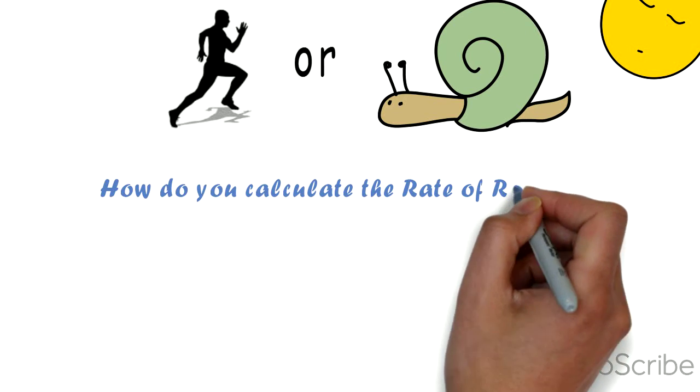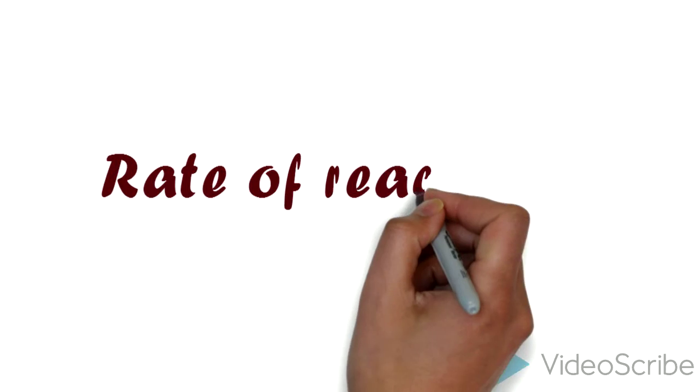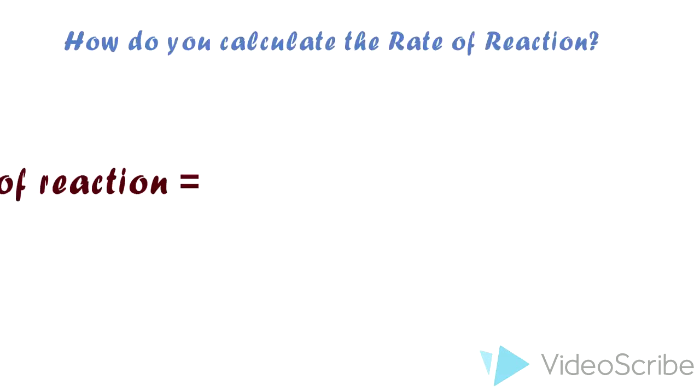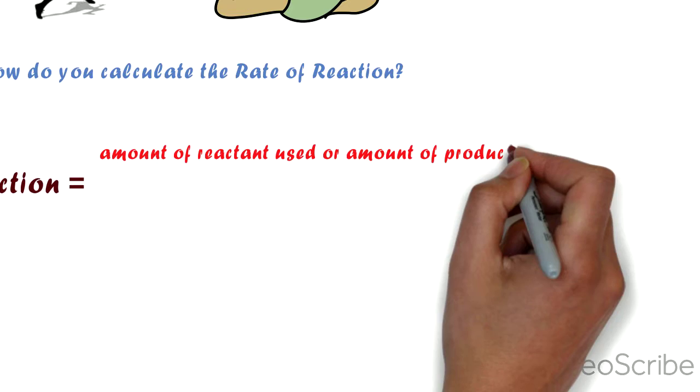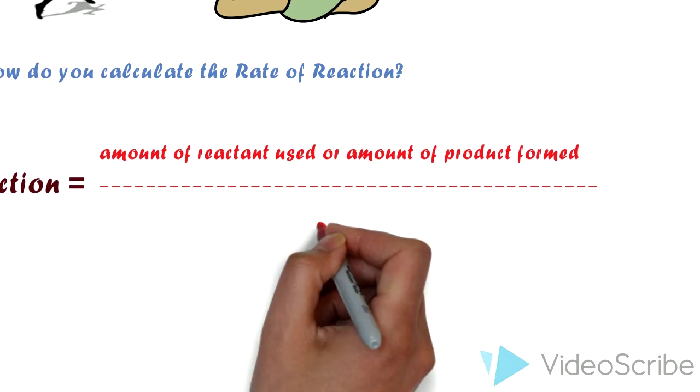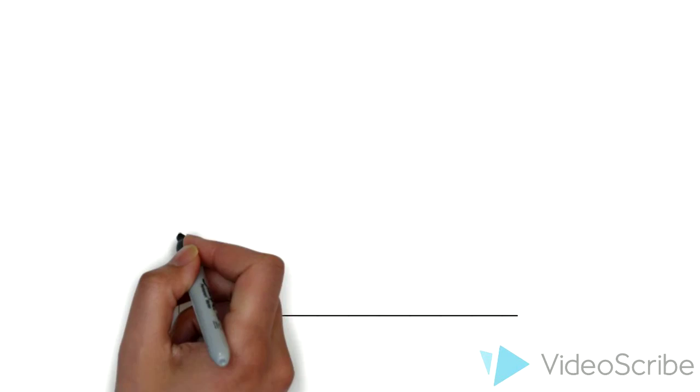How do you calculate the rate of reaction? Now, that's the key. To measure the rate of reaction, you have to look at the amount of reactant that is used up or the amount of product that's formed, and you divide that by time.